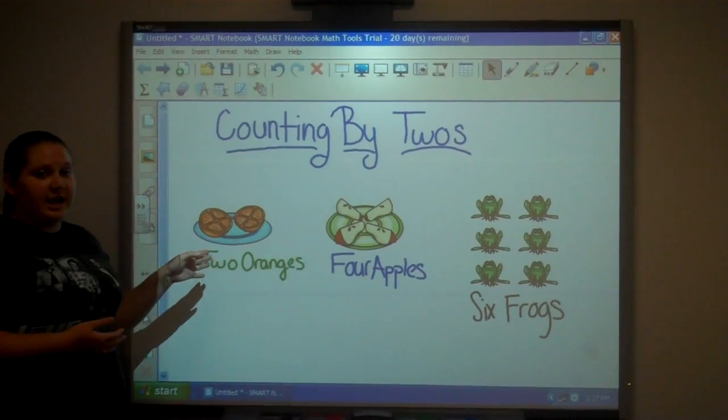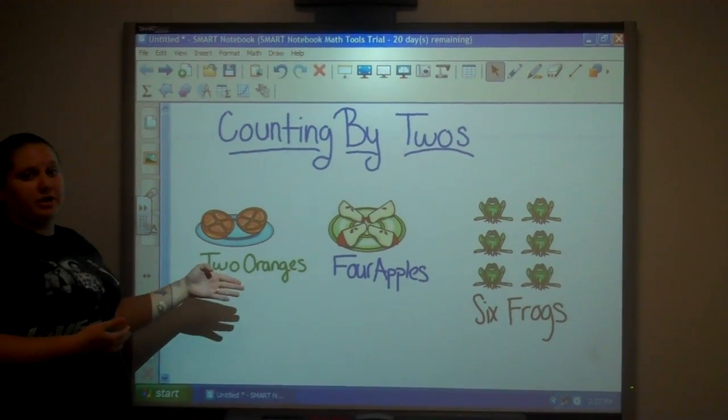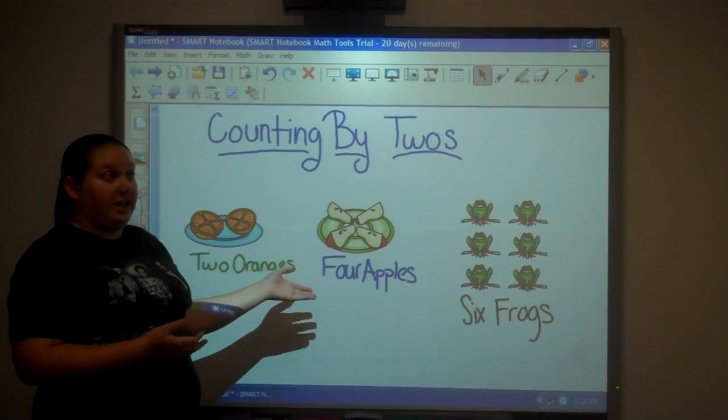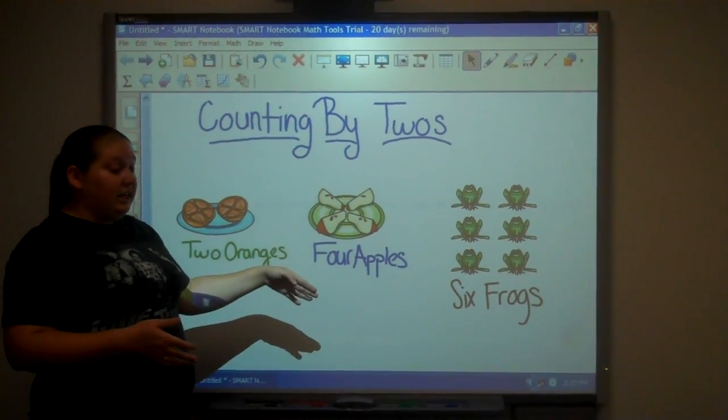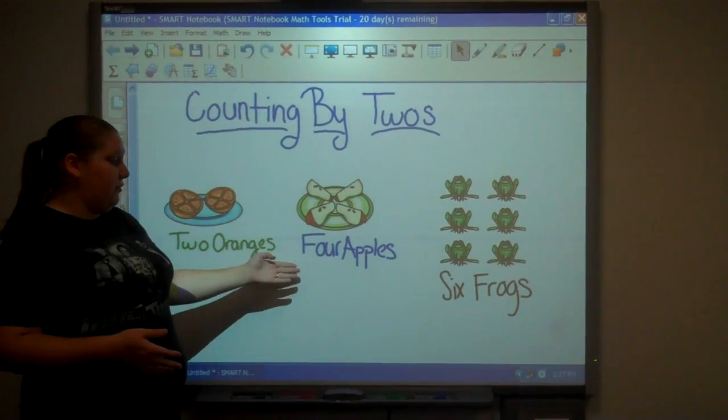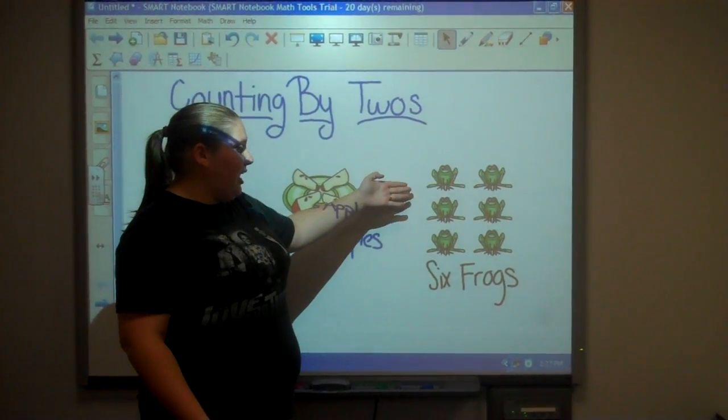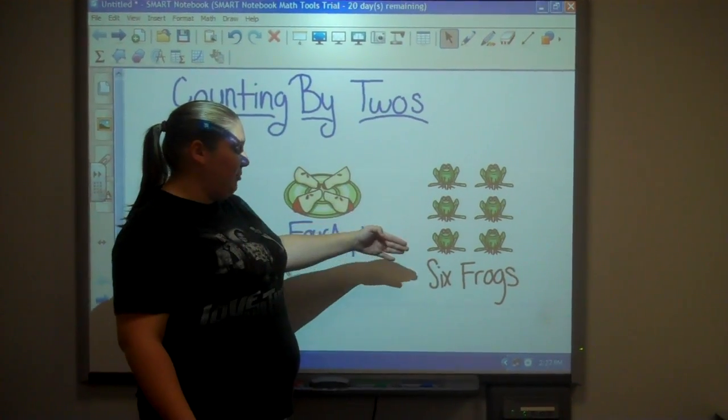When you cut an orange in half, you now have two halves of an orange. When you cut half of an apple, you end up with two more pieces, which now gives you four pieces of an apple. And then we have frogs, so every time we're adding by two.